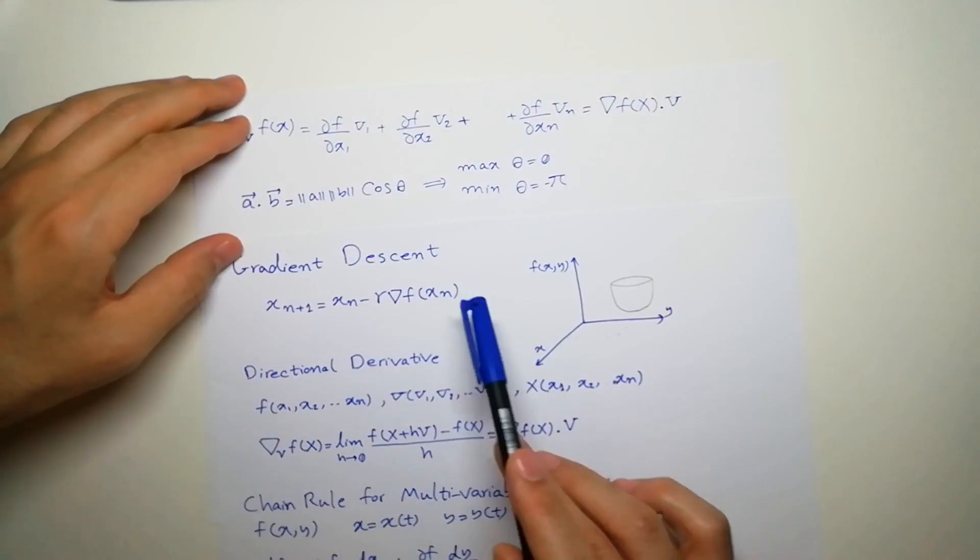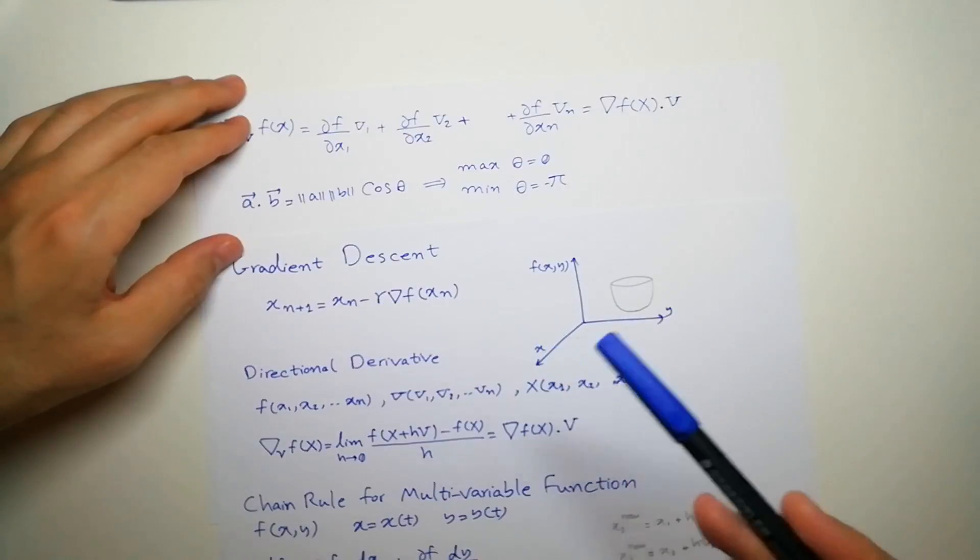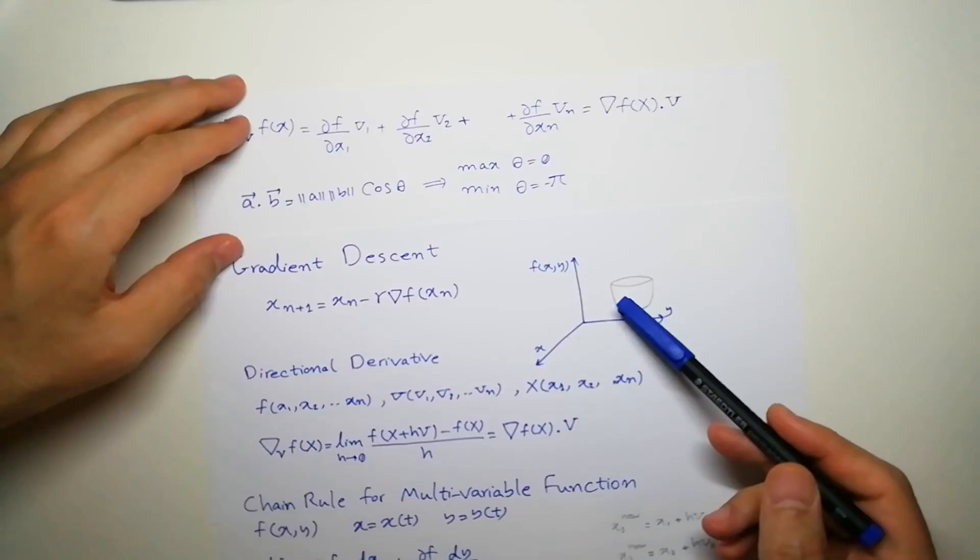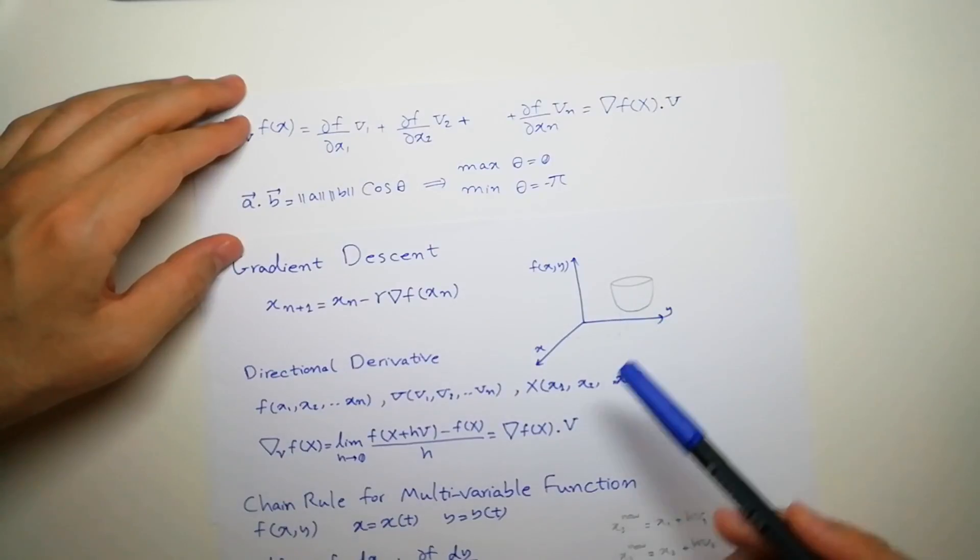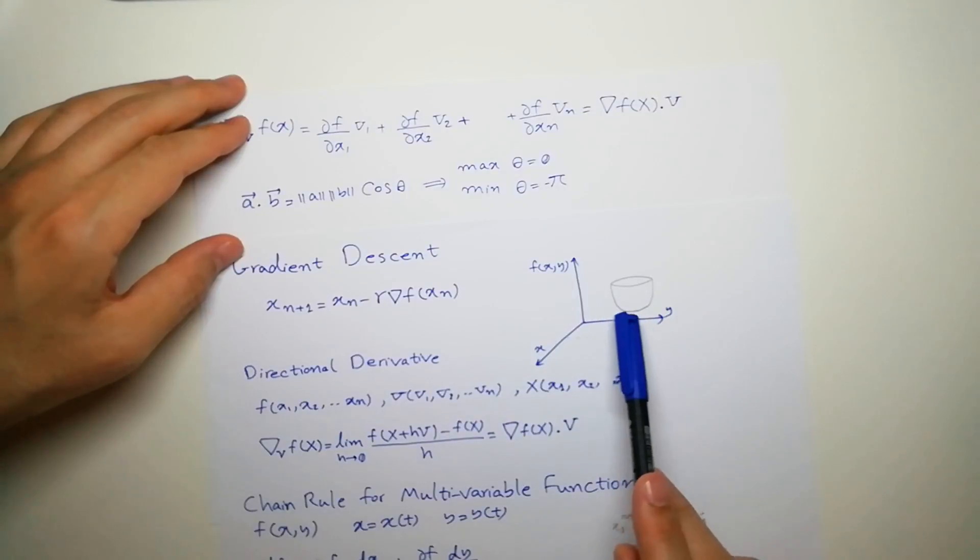And we multiply by some multiplier α or gamma or lambda, because we want to increase or decrease the step. Sometimes we might overshoot from here or end up here. Sometimes we want to go slower or faster.